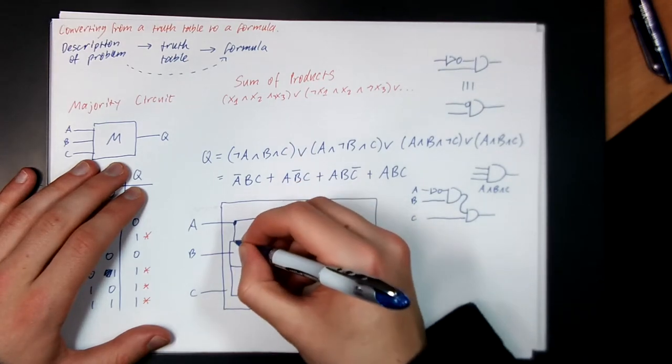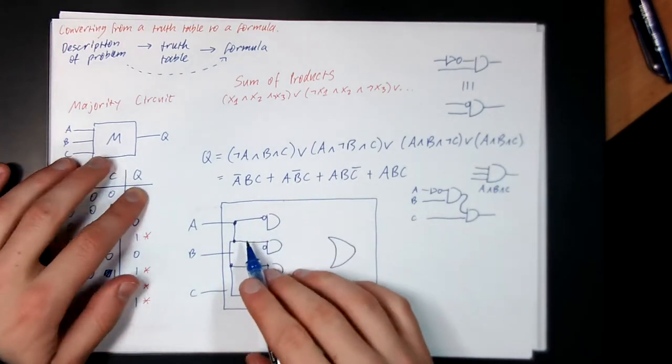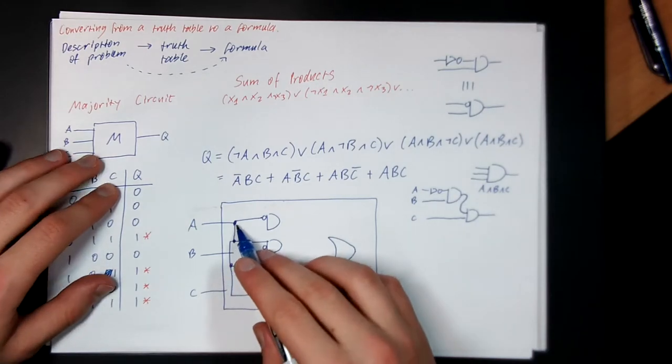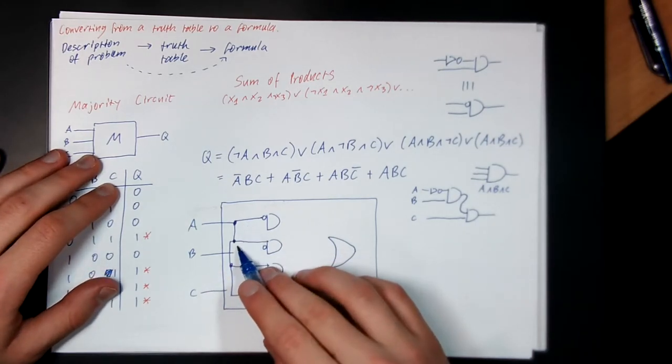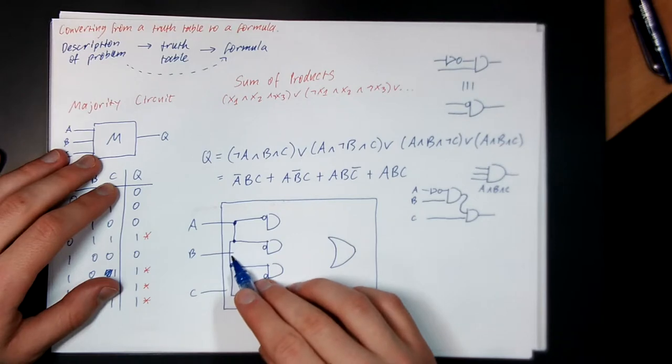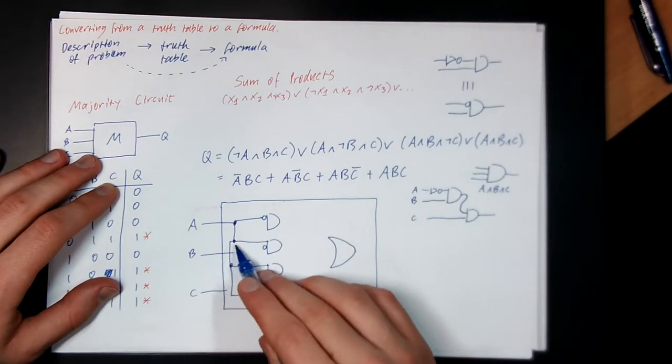And now we'll... You always should draw dots whenever there's a junction point to represent that these wires are all connected together. So at this point, these wires are connected. At this point here, they don't. So the B wire sort of like jumps over the A wire.